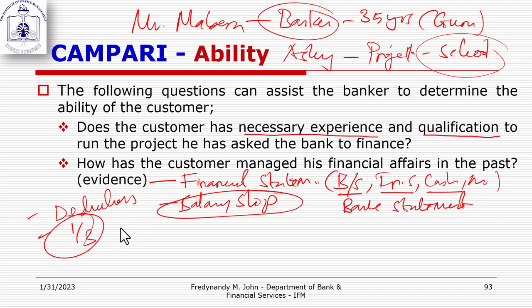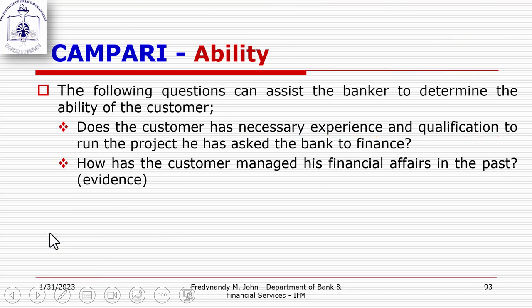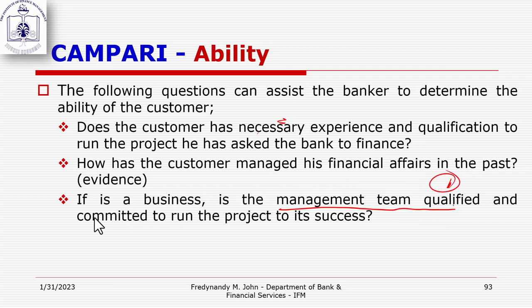Regarding the one-third rule for salaried workers: you need to be sure the salary the customer receives is sufficient to afford the loan, particularly the amount requested. Check the salary slip for deductions and confirm the net take-home amount. The repayment must not exhaust the protected one-third. Is the management team qualified and committed, or is it just a group looking to secure funds, misappropriate them, and default?